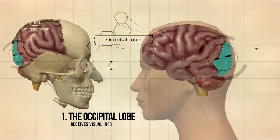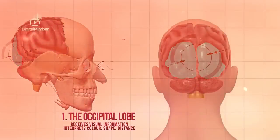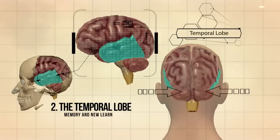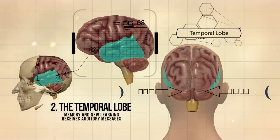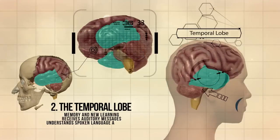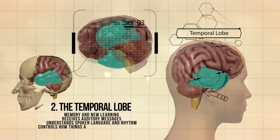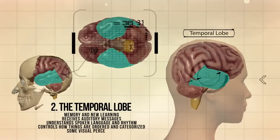The occipital lobe receives visual information, interprets color, shape, and distance. The temporal lobe is responsible for memory and new learning, receives auditory messages, understands spoken language and rhythm, and controls how things are ordered and categorized, and some visual perception.